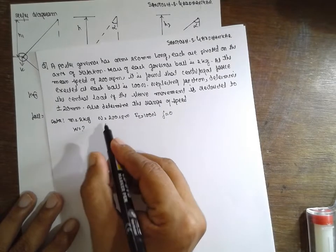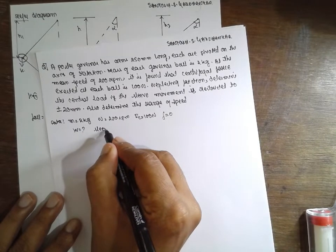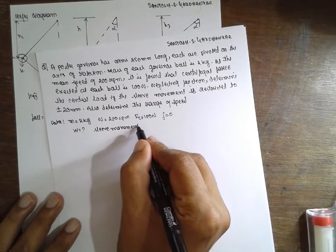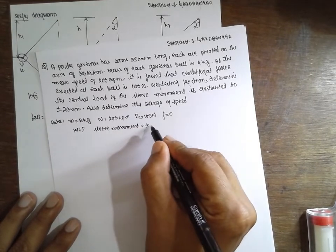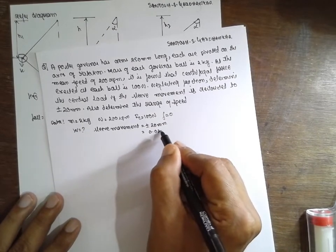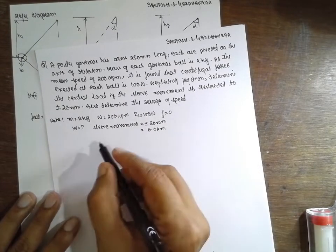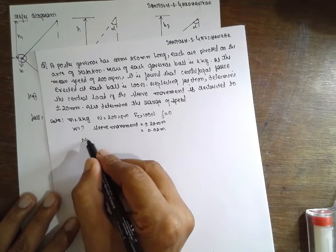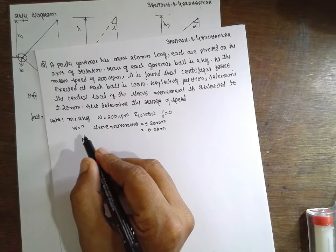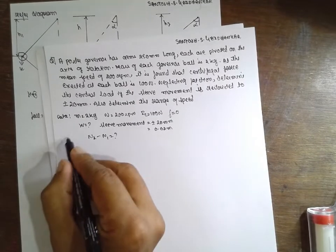Now consider the sleeve movement here. The sleeve movement is restricted to plus or minus 20 mm, which is 0.02 meter — expressed in terms of meters. Also determine the range. Range we have to find out, that is n2 minus n1.